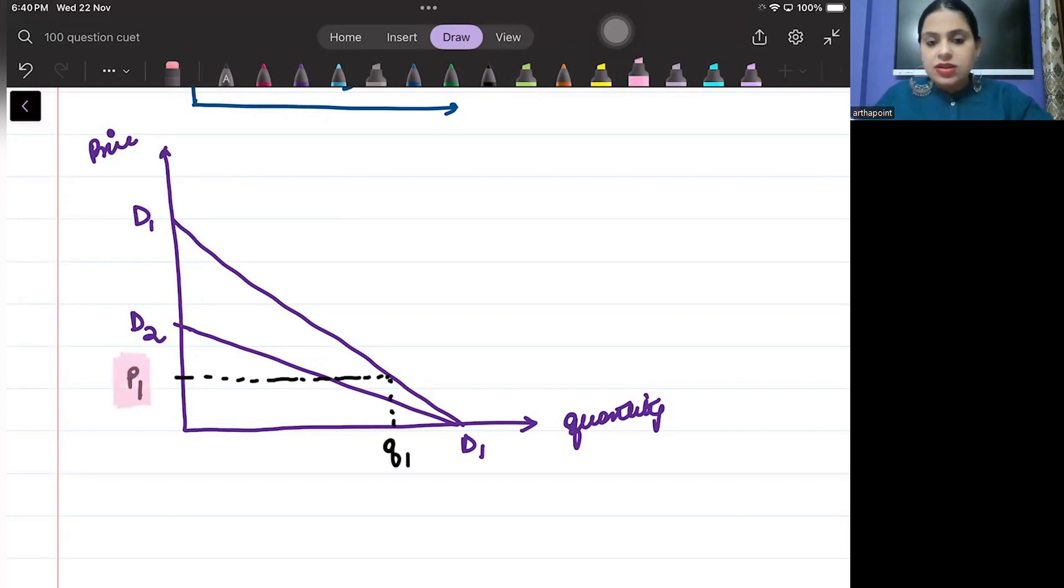At price P1, there is the quantity that is demanded was Q1. Now, what is the price P1 demand? Q1 - because I have to move according to the new demand curve. So, earlier when price was P1, then quantity used to be Q1.